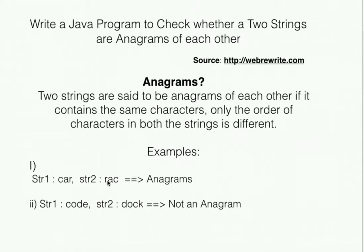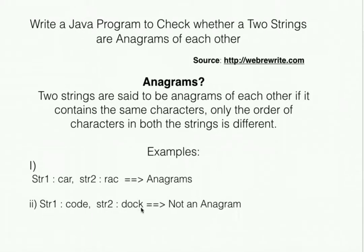In an anagram, both strings must contain the same exact letters at the same exact frequency. For example, if string one is 'car' and string two is 'RACK' (with an extra K), it is not an anagram. Similarly, if string one is 'code' and string two is 'dock', the letter E is present in the first string but not in the second, so it's not an anagram. The order of characters does not matter — only the frequency does.